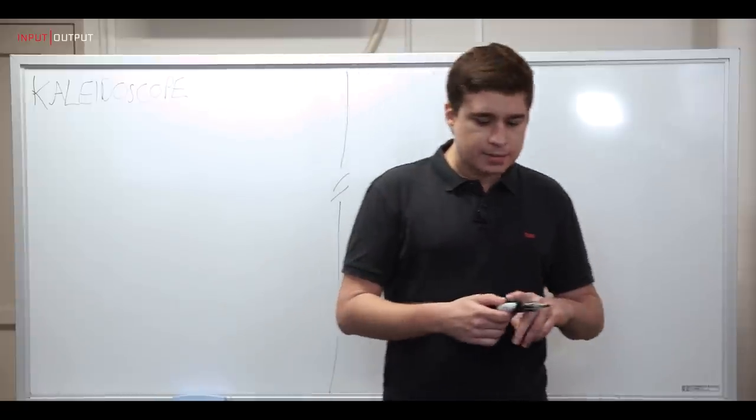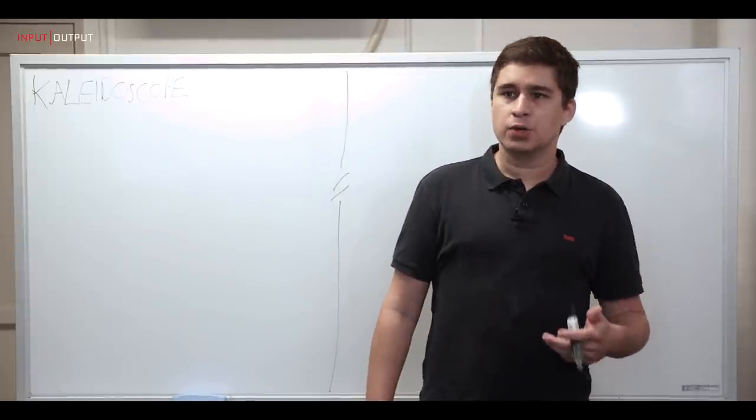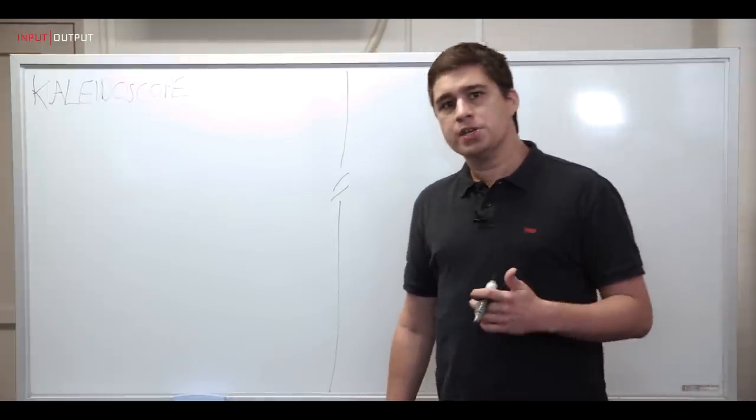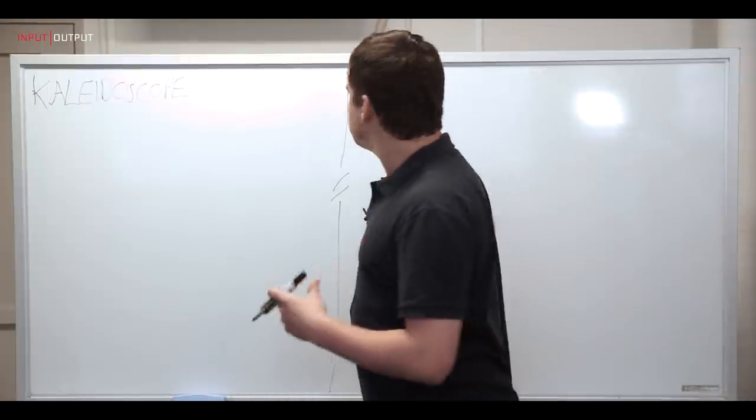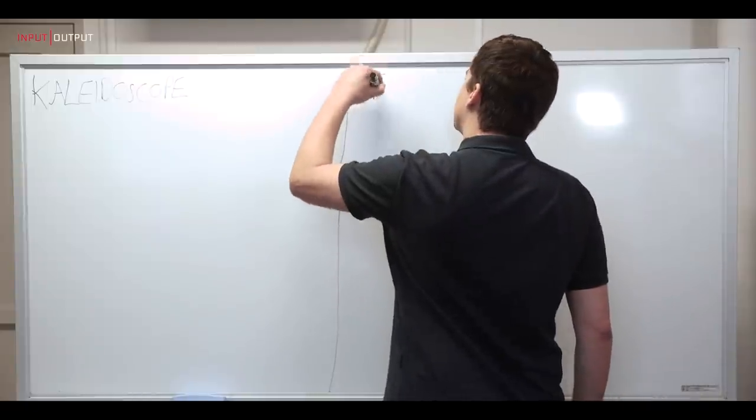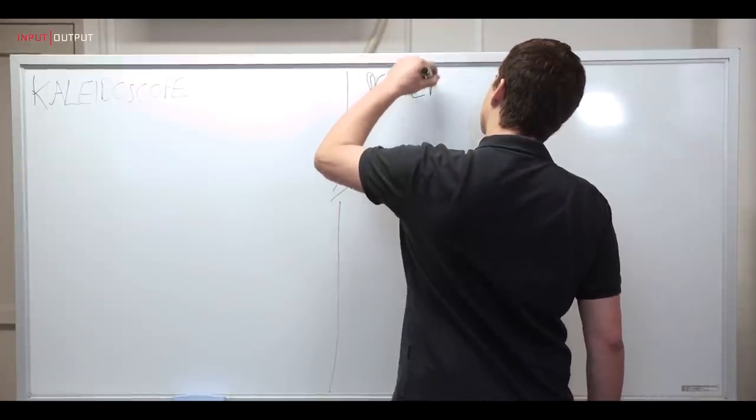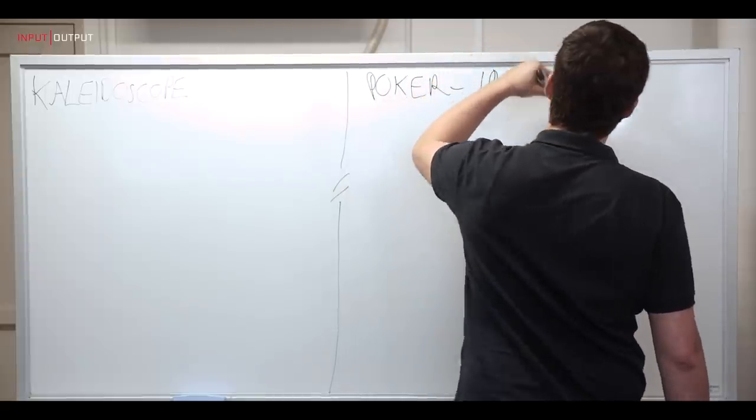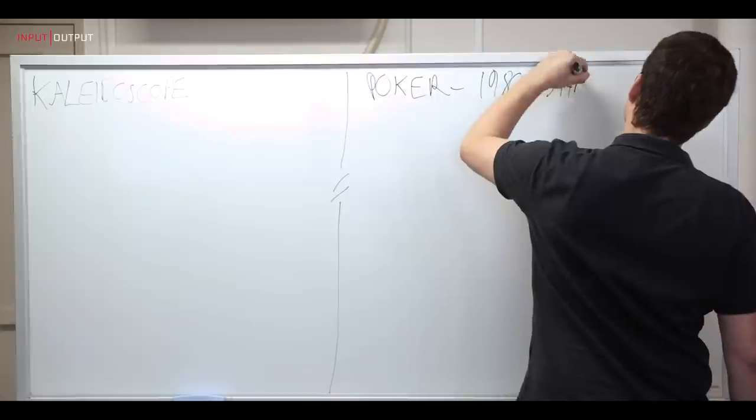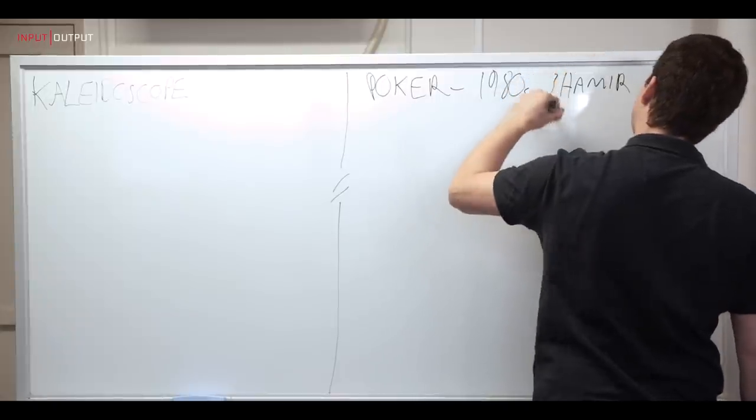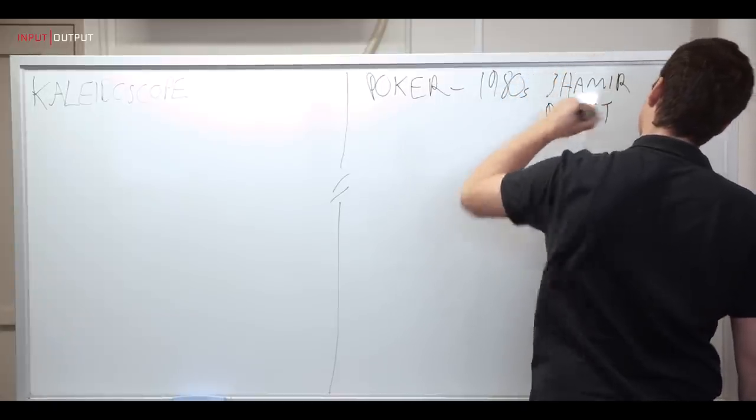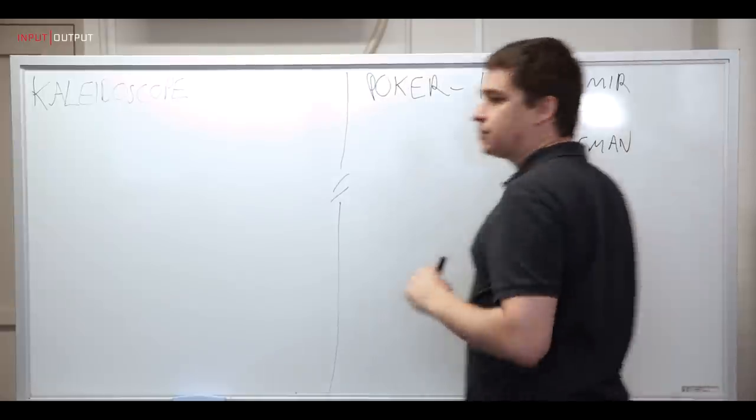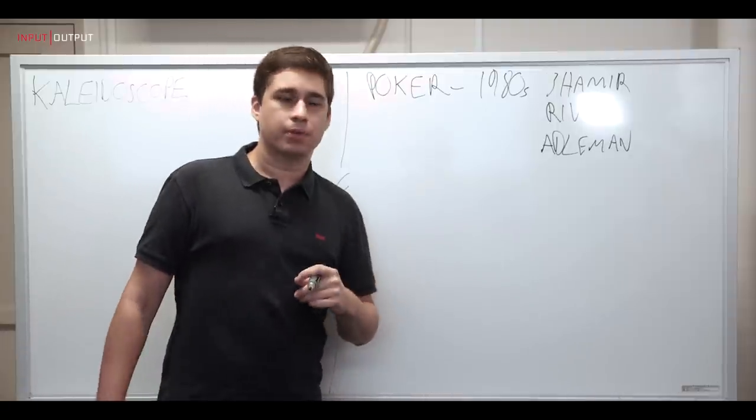How do you achieve that? That's been a topic of active research in the community of cryptography for the past 30 or 40 years and it started back in the 1980s with a line of work started by Shamir, Rivest and Edelman, the same inventors of the RSA public encryption algorithm.